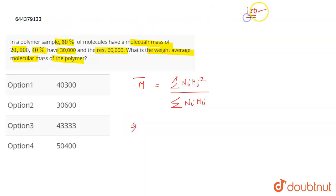Now let's assume that you have 100 molecules, out of which 30% means 30 molecules have 20,000 mass, 40 molecules have 30,000 mass, and the remaining will be 30, so these 30 have 60,000.